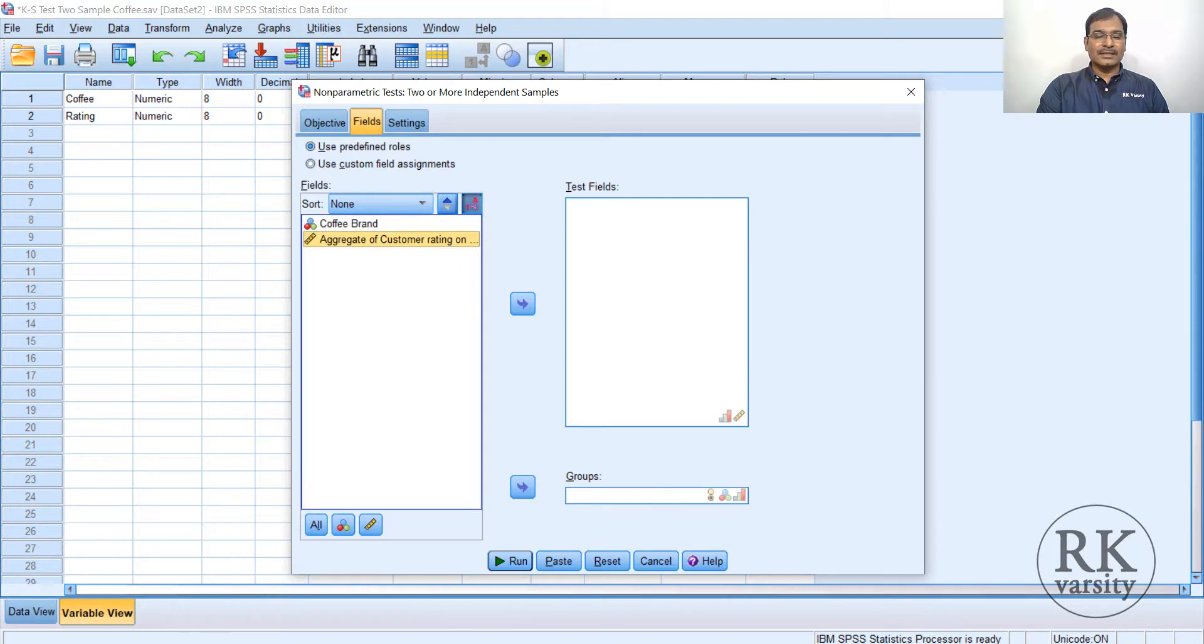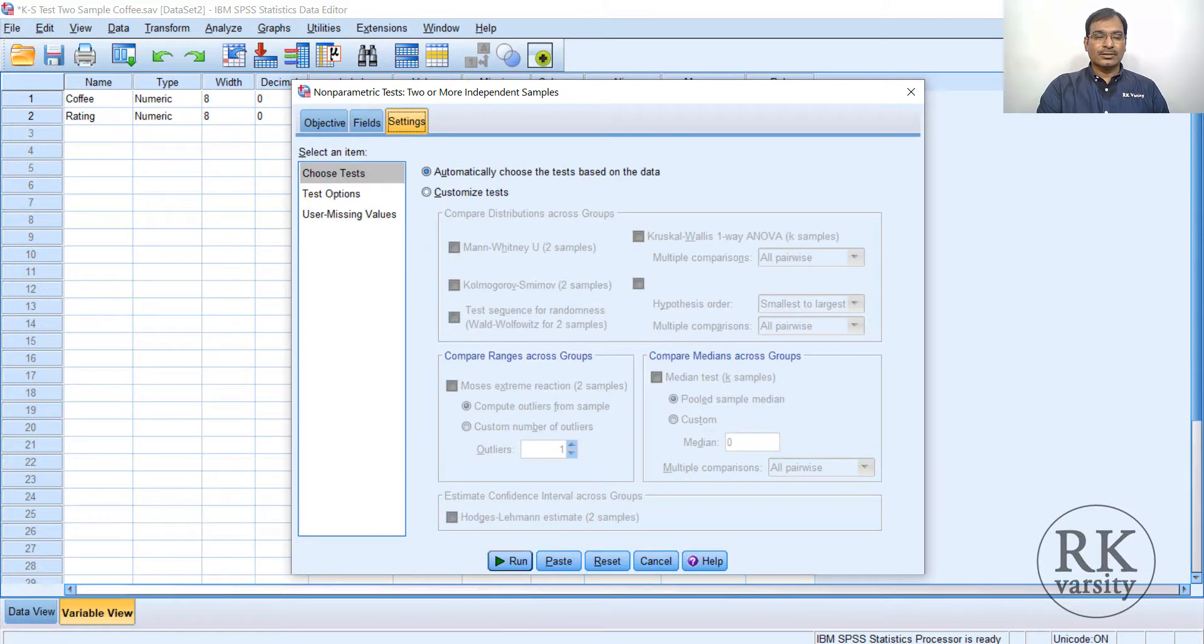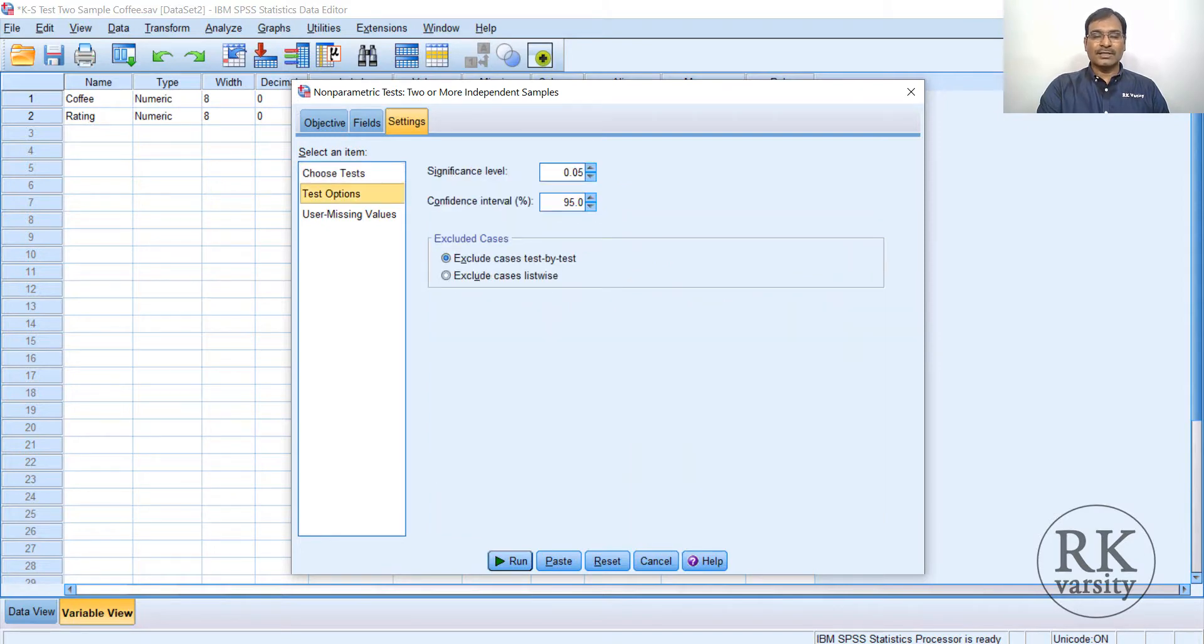Your test fields is aggregate customer feedback or rating. It accepts only two forms—ordinal and scale. Choose this by clicking on the arrow. Next is your coffee brand. Send this to the groups. Groups will accept all three types: nominal, ordinal, as well as scale. Next, go to Settings. Choose Tests. Select Customized Tests, and from Customized Tests select Kolmogorov-Smirnov two samples test. Then test options—you have significance levels at 5% and confidence interval of 95%. Then click Run.